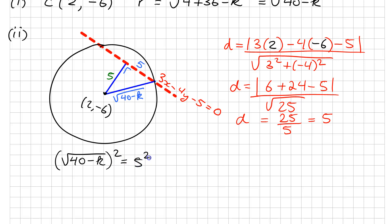5 squared plus 5 squared, so we have 40 minus K equal to 50, minus K equals 10, so K equals minus 10.